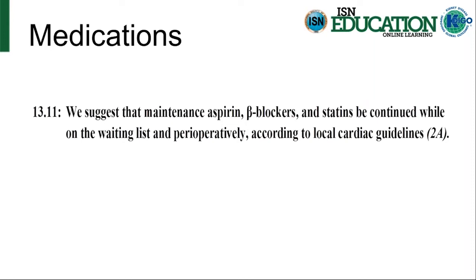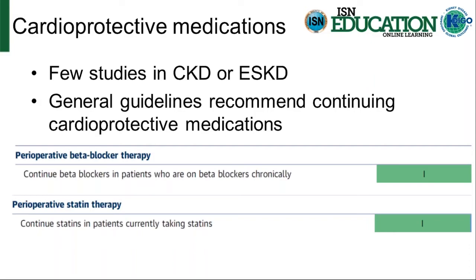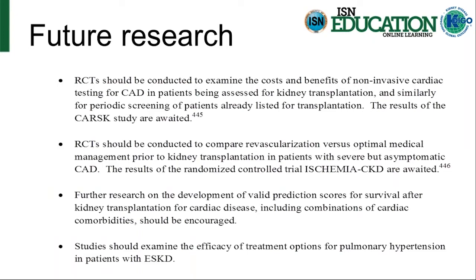Regarding medications, we suggest that maintenance aspirin, beta blockers, and statins be continued while patients are on the waiting list and perioperatively according to local cardiac guidelines. There are few studies specifically in chronic kidney disease or end-stage kidney disease looking at cardiac medications. European Society and American Society guidelines both recommend perioperative beta blocker therapy and perioperative statin therapy if the patient is already on those agents. If people are on aspirin, they should remain on aspirin.